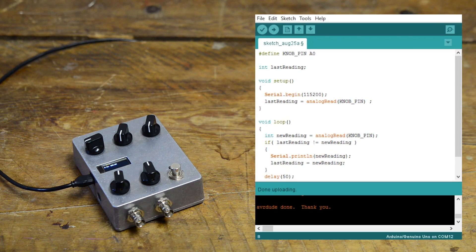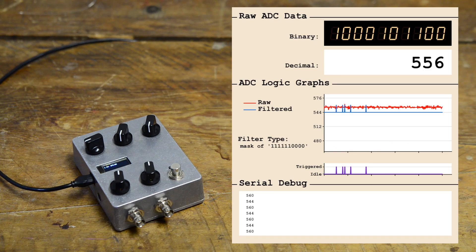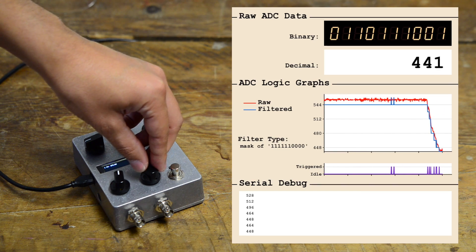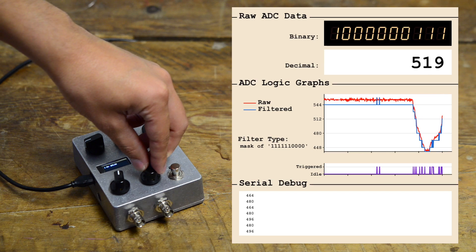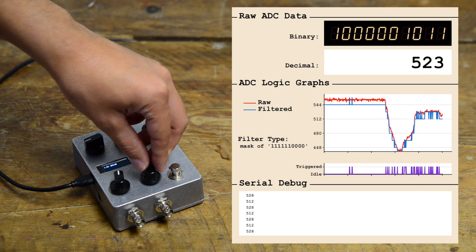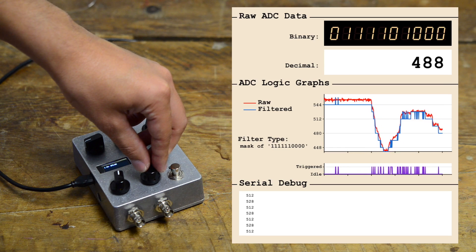A super easy thing we can try is to just chop off those pesky least significant bits where all the noise is. We see a few counts of noise, so let's kill the lowest 4 bits, or a range of 16. We'll do this by logically ANDing a binary mask. It has a lower resolution, but the trigger detection is improved. There are still areas where misdetection is just as bad, where binary carries occur. But it's very cheap on the processor to implement, and may be acceptable for some applications.